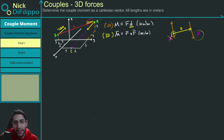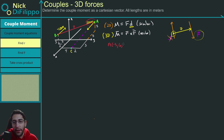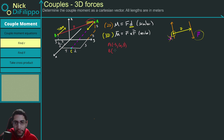Let's figure out where A and B are in space. Point A: in the X direction I go back 3, so A_x = -3; in the Y direction I go 6 (that's 4 plus 2); and in the Z direction I go up 3. Point B: in the X direction I go 2; in the Y direction I go -2; and in the Z direction I go 3.